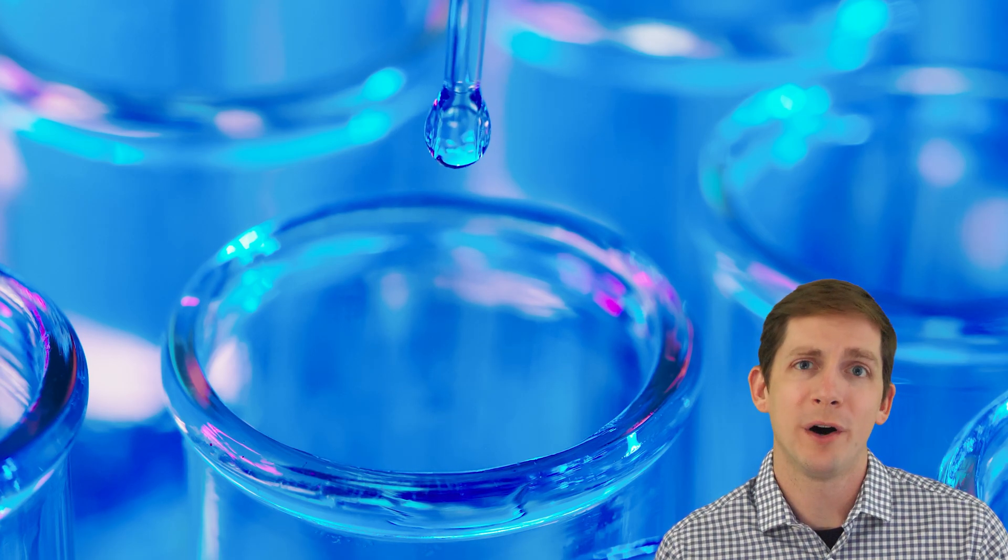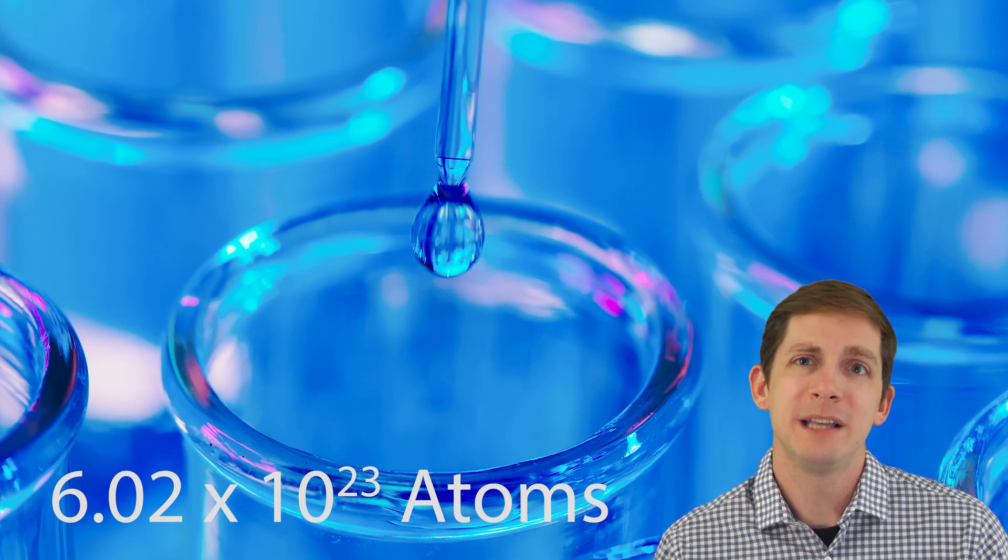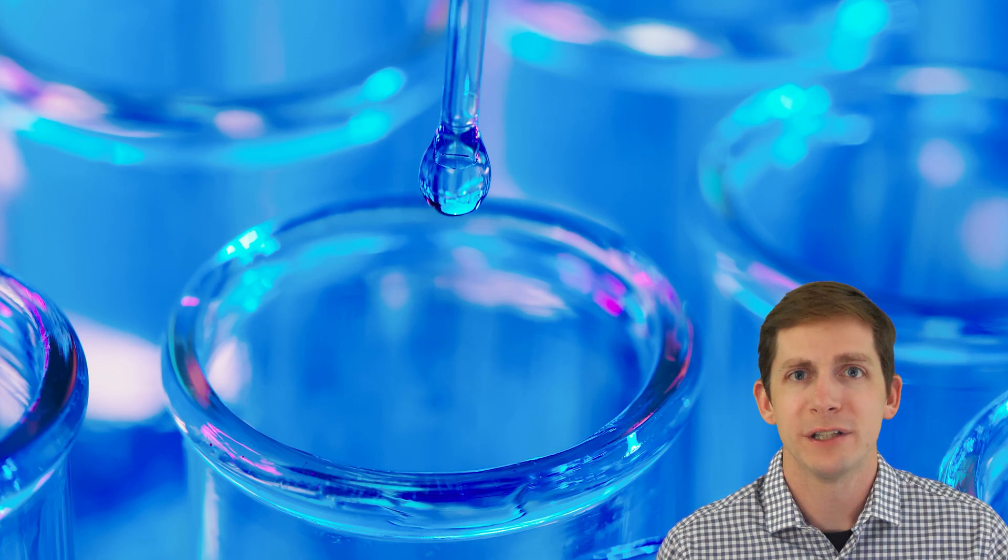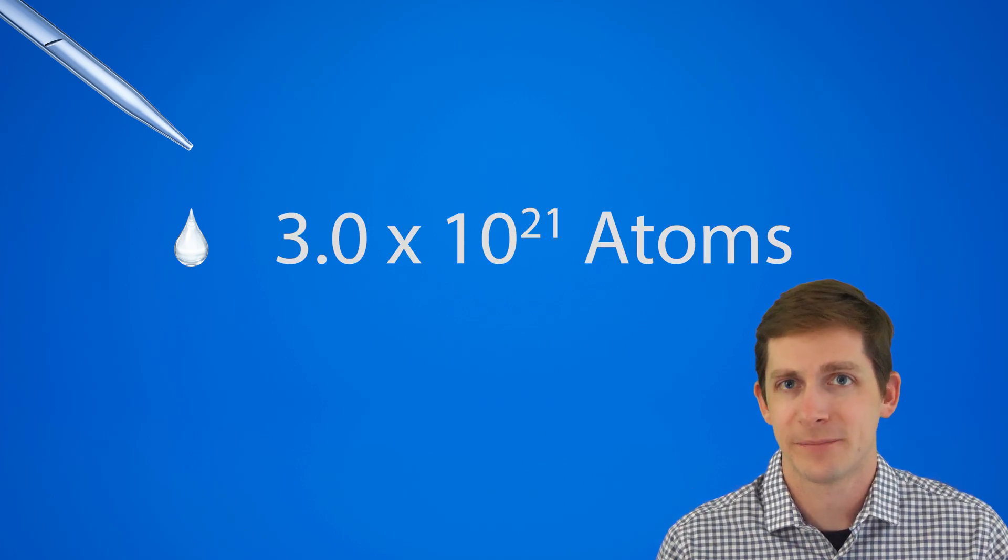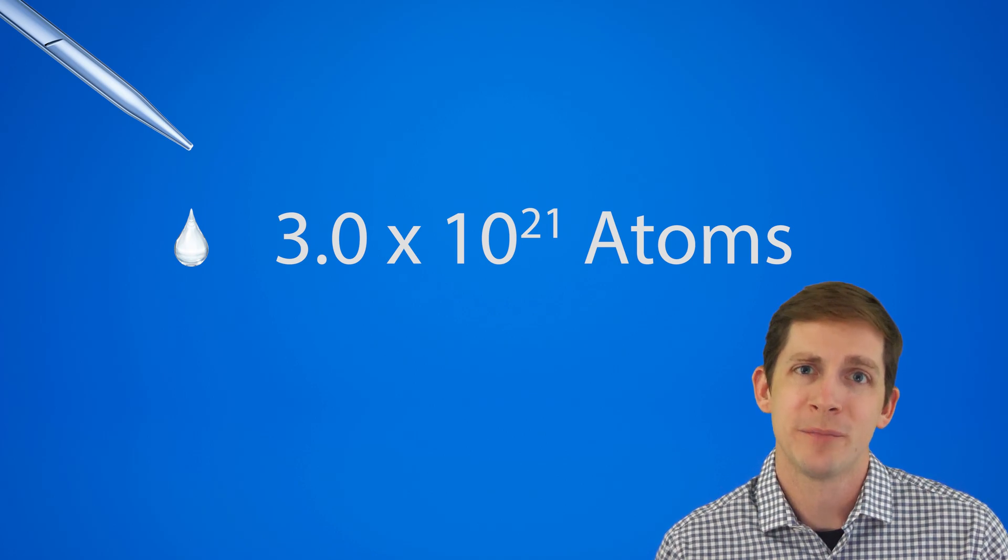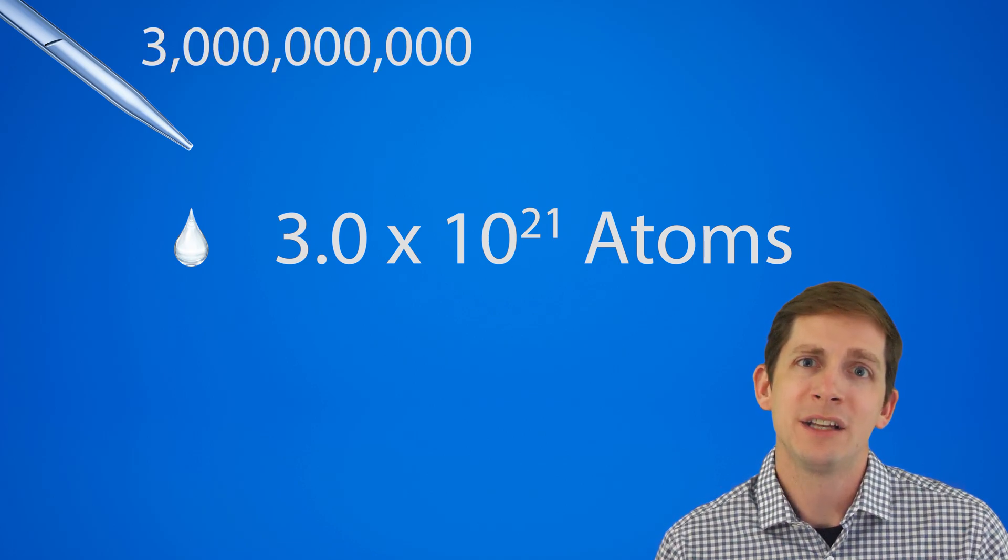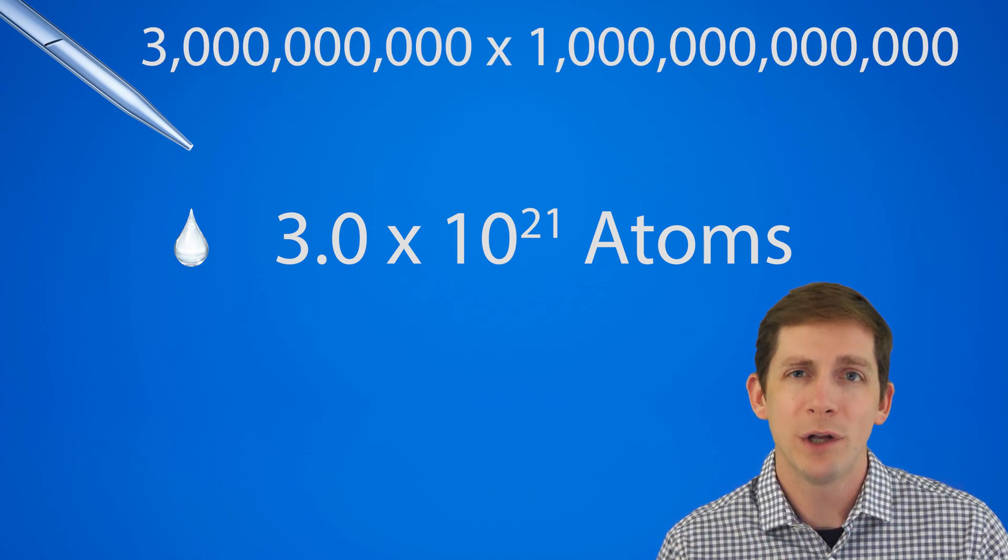How many computers would it take to track the atoms in one drop of water? If you remember from chemistry class, one mole of a substance has 6.02 times 10 to the 23rd atoms. One mole of water is around 0.64 ounces, which is about 200 drops of water. So one drop of water has 3.0 times 10 to the 21st atoms. This is huge. It is actually 3 billion times a trillion atoms in one drop of water.